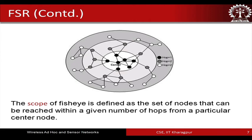The scope of a fisheye is defined as the set of nodes that can be reached within a given number of hops from a particular center node. We have a center node, and surrounding it we have zones — a first zone, then a second, then a third, and so on — the entire thing looks like a fisheye. Nodes within a particular zone get more frequently updated than nodes outside, and the zone boundaries are determined by a pre-configured number of hops.